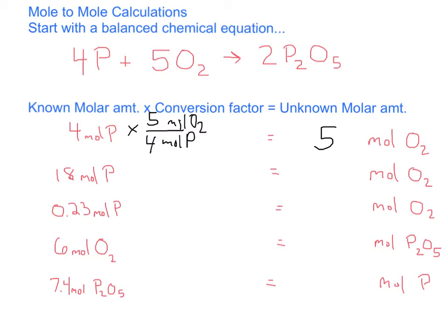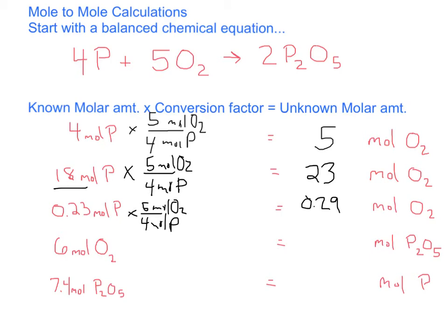What if we had a different number of moles of phosphorus? Now we have 18 moles of phosphorus, and we want to know how many moles of O2 are needed to react with that. It's the very same setup: 5 moles O2 to 4 moles P. That equates out to 22.5, and with sig figs we write 23 moles of O2. We're multiplying the given amount times the mole ratio of 5 fourths. Now with a smaller amount, 0.23 moles phosphorus, the calculation gives 0.29 moles of O2.